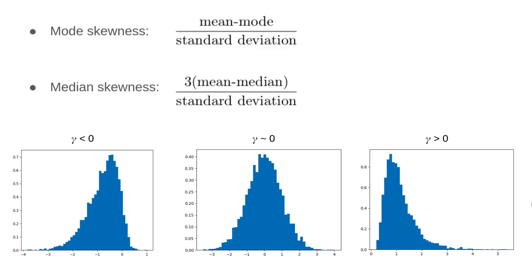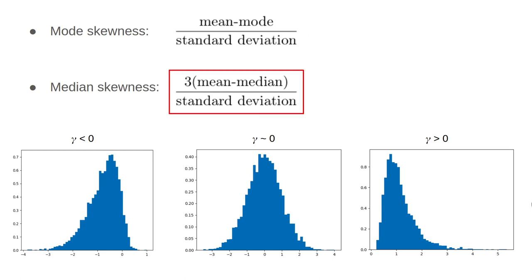Like with central tendency and spread, there are also other statistics which measure skewness. One is called mode skewness: mean minus mode divided by standard deviation. Another is called median skewness: mean minus median divided by standard deviation. It's also convention sometimes to multiply this by a factor of three. Basically, if the mean is to the right of the mode or median, then the distribution is positively skewed. If it is to the left, then the distribution is negatively skewed.